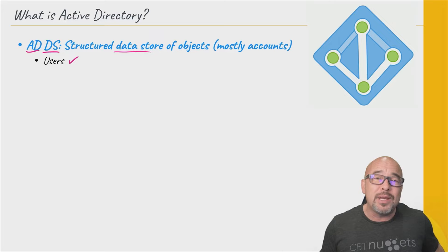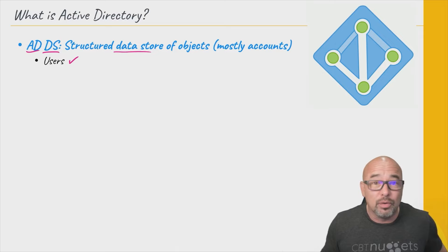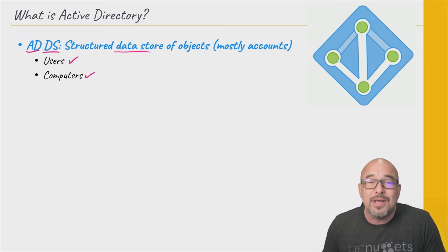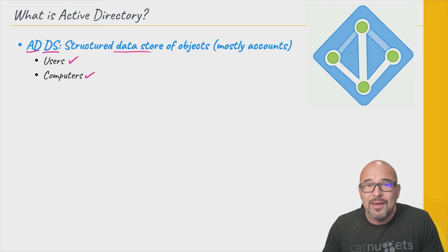The username and password will be used to log on that user so they can access resources, either on their own local computer — like a Windows 11 computer, for example — or elsewhere throughout the entire environment. Computer accounts will also be stored there. Computers will have a unique identifier, just as users do.